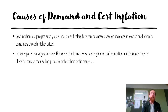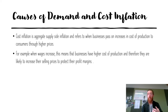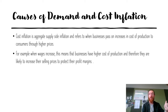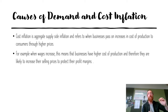Cost inflation is an aggregate supply-side inflation that refers to when businesses pass on increases in their cost of production to consumers through higher prices. For example, when wages increased in 2022 by 5.3%, businesses faced a higher cost of production and were likely to increase their selling prices to protect profit margins. Supply chain disruptions have also driven up the price of resources for businesses. Raw materials like timber, steel, and construction materials have gone up significantly in price, so businesses pass on that increased cost to consumers — that is cost inflation.